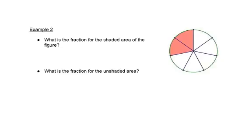In this question it asks: what's the fraction of the shaded area? First we look at the whole circle and count how many pieces it is divided into — that gives us the denominator. We have 7 pieces, so our bottom number is 7. Then we count how many are shaded: 2. So our top number is 2, giving us 2 sevenths.